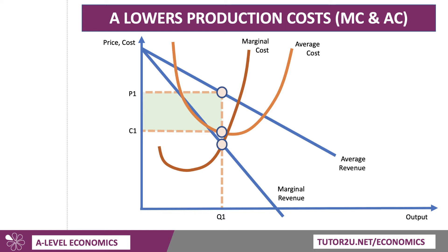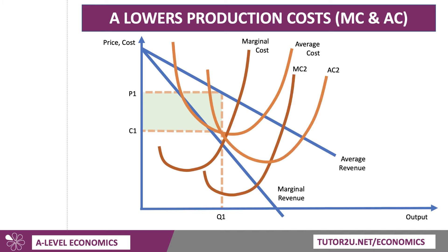Now, if you subsidise the costs of production, both the marginal and the average cost fall because the government is providing some financial support. Marginal and average cost shift to MC2 and AC2. Assuming a constant level of demand, that means that the profit maximising output moves from Q1 to Q2, where MC meets MR. Drawing up to the demand curve, you can show that the price charged can fall to P2. That's handy because subsidies nearly always lead to lower prices for consumers.